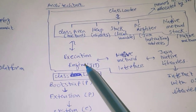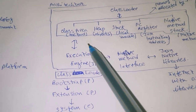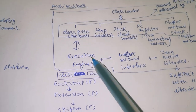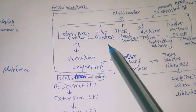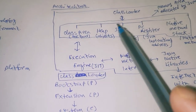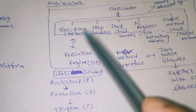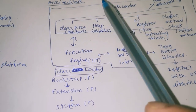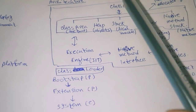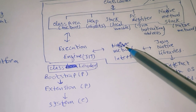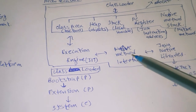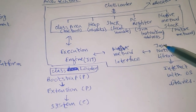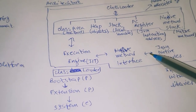Next is the execution engine. Inside the execution engine, there is the interpreter and the JIT compiler. JIT means Just-In-Time compiler. It is used to compile some portions of the code and speed up the execution process.